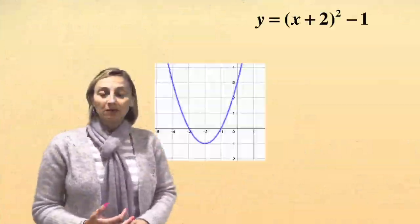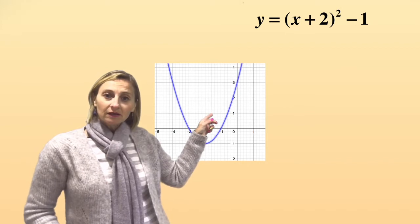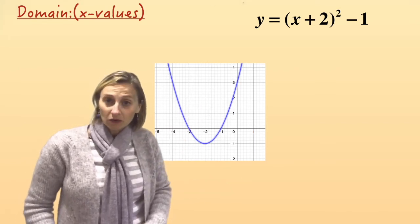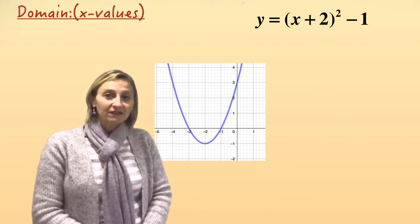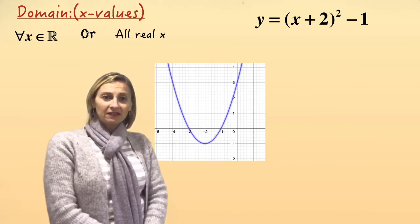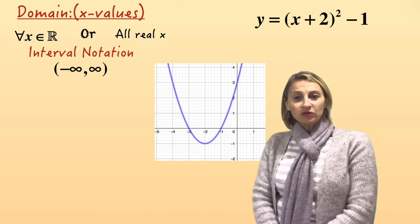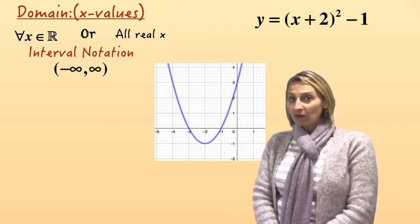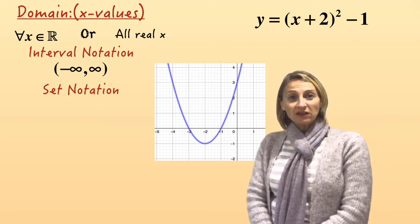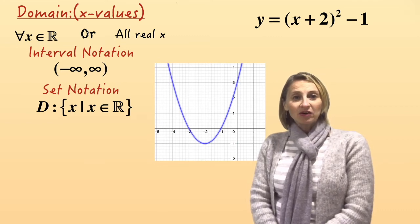What if we have y equals (x plus 2) squared minus 1? This is a parabola moved to the left — because it's a plus two, so it moves left two — and the whole thing goes down one because of the minus one. So what are the possible x values? Well, x can be anything, so it's all real x. In interval notation, it's going to be from minus infinity to infinity, and of course they can't equal either one of those, so we put it inside round brackets. And in set notation: D colon curly brackets, x such that x is an element of the real numbers.